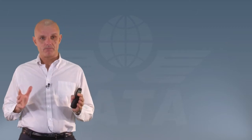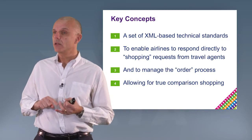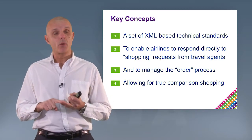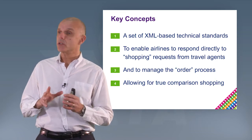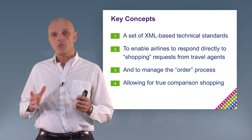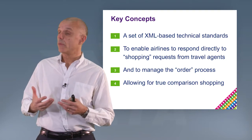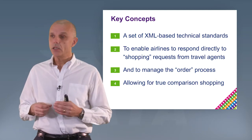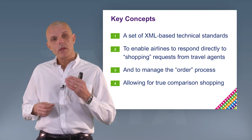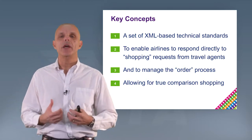Resolution 787 clearly defines the scope of NDC. It's an XML-based standard that enables airlines to respond to shopping requests coming from travel agents. But it also includes in its scope a set of standards for order management, which means that should an airline decide or choose to do so, they will also be able to carry out the booking, the payment, the ticketing process. And finally, NDC supports comparison shopping. As a result, it will support the aggregation function.